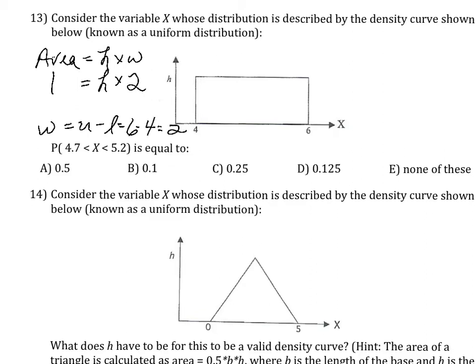So this width is 2, and that makes the height 1 half. So the height of this rectangle, this density curve, is 1 half.